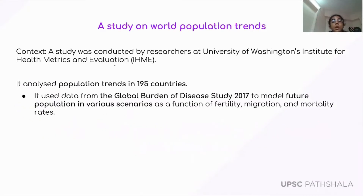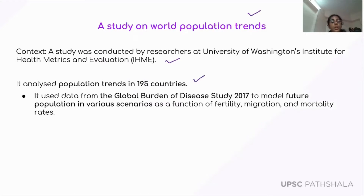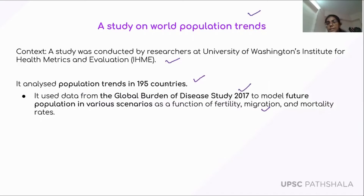The first news is about a study on world population trends. A study was conducted by researchers at the University of Washington's Institute for Health Metrics and Evaluation. They studied world population trends in 195 countries, using data from the Global Burden of Disease Study 2017 to model future population in various scenarios as a function of fertility, migration and mortality rates.